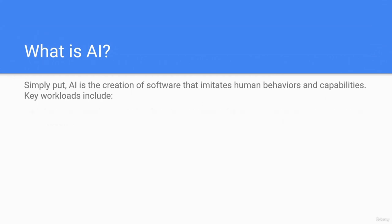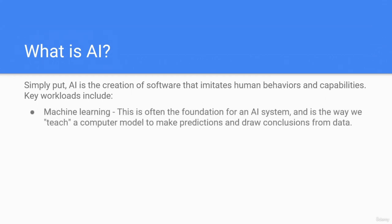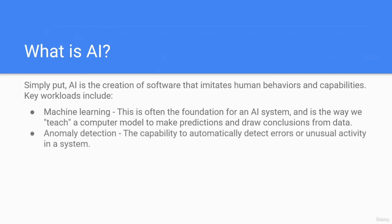Key workloads include machine learning — often the foundation for an AI system — which is the way we teach a computer model to make predictions and draw conclusions from data. Anomaly detection is the capability to automatically detect errors and unusual activity in a system.